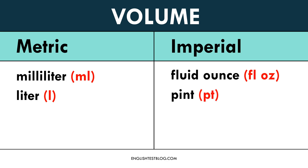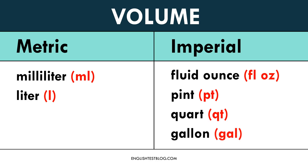The pint is used for liquids, especially milk or beer. One pint equals 16 fluid ounces, or about 473 milliliters. The quart is used for larger liquid quantities — one quart equals 2 pints, 32 fluid ounces, or about 946 milliliters. The gallon is used for fuel or big containers of liquid. One gallon equals 4 quarts, 8 pints, 128 fluid ounces, or about 3.785 liters.